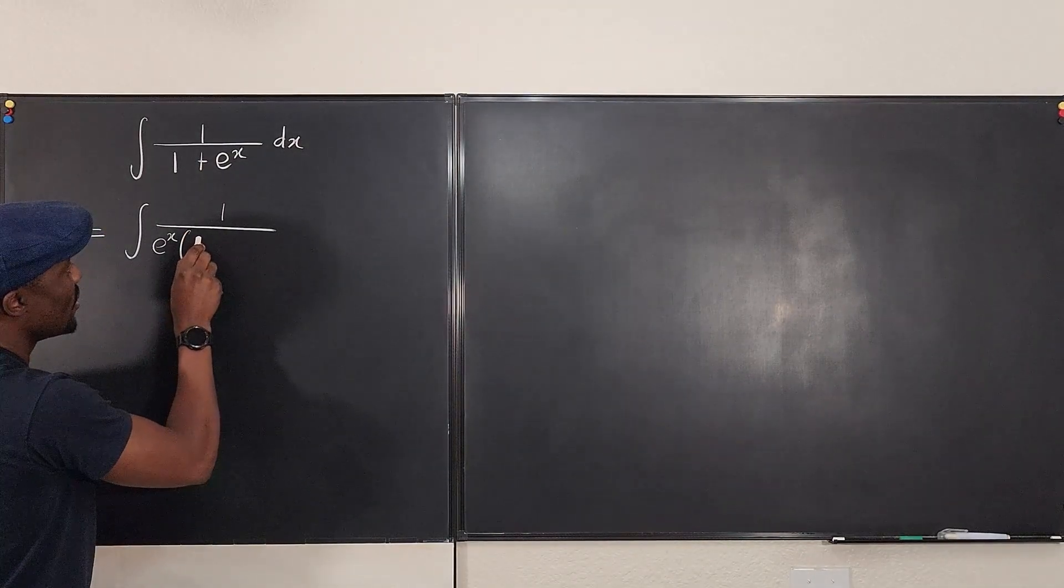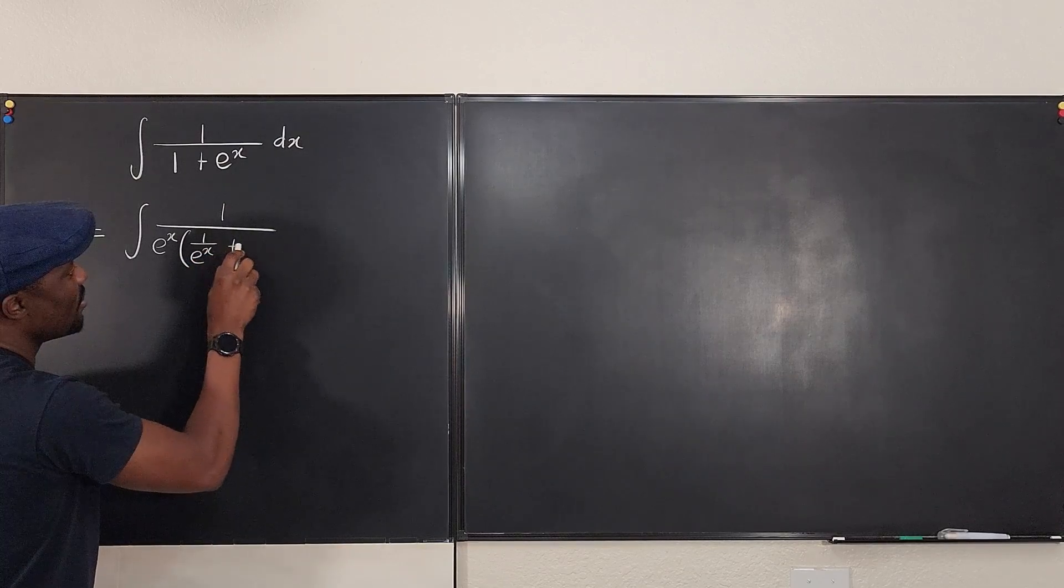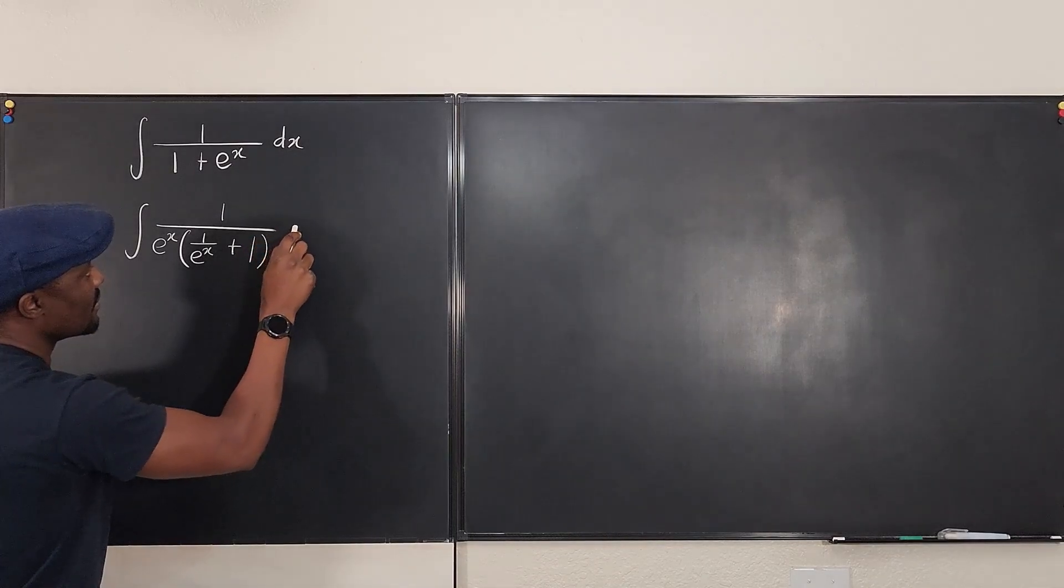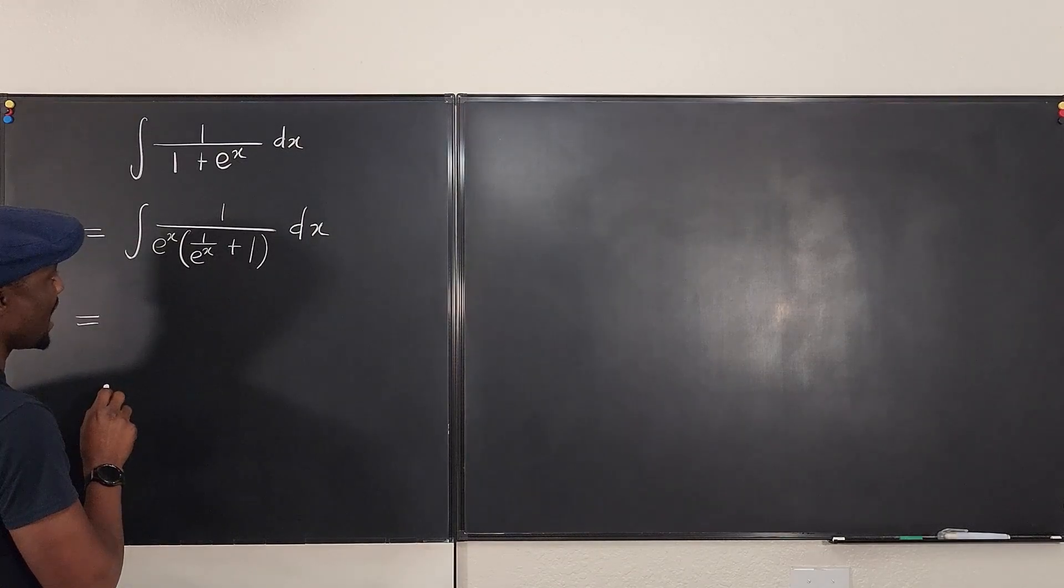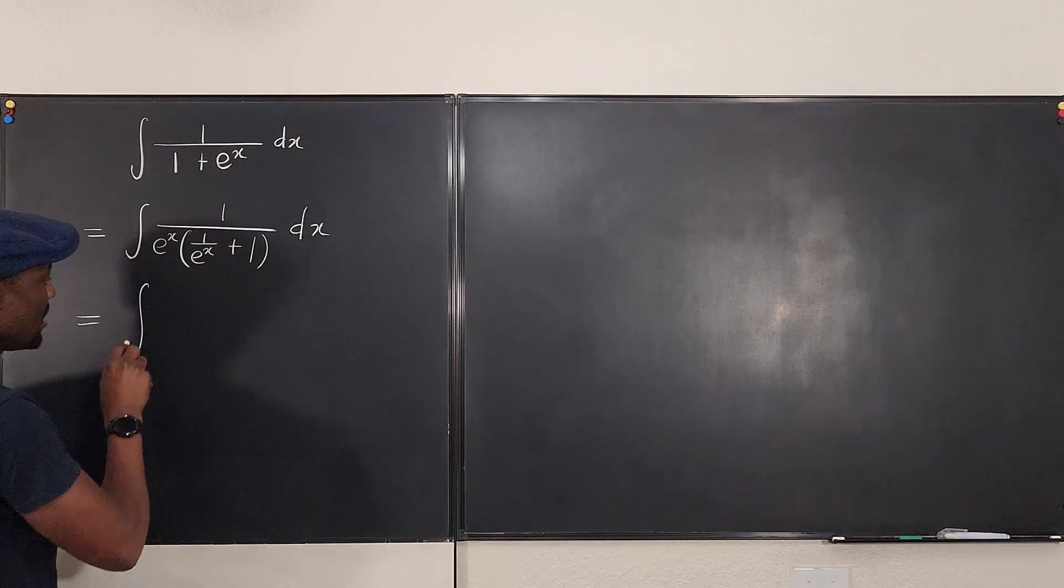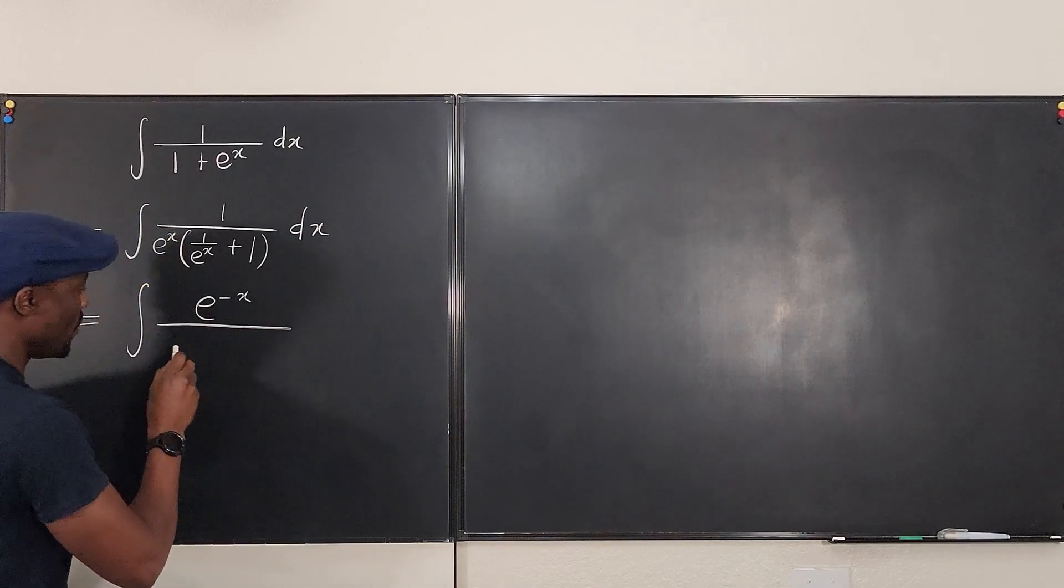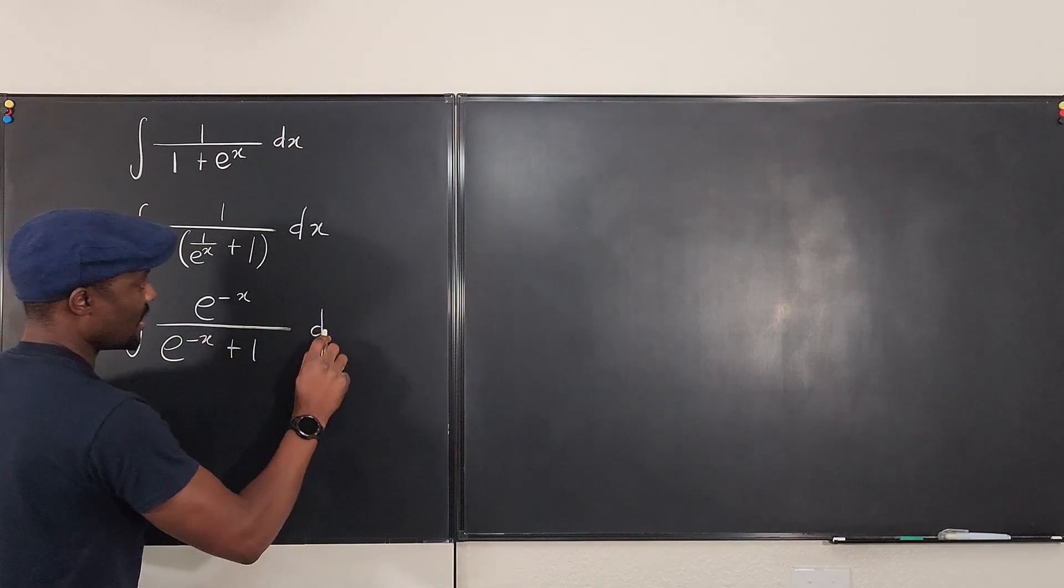Let me just write it this way: plus e to the x divided by e to the x, that's just 1. And this is the same thing as I can move this e to the x up here so that it becomes e to the minus x plus 1 dx.